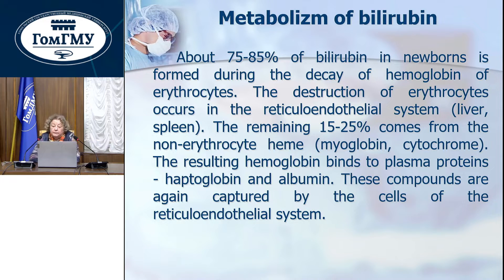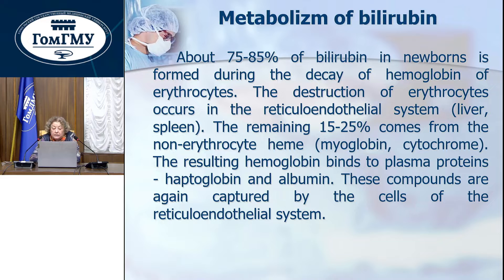Metabolism of bilirubin: About 75–85% of bilirubin in newborns is formed during the destruction of hemoglobin of erythrocytes. The destruction of erythrocytes occurs in the reticuloendothelial system, in the liver and spleen. The remaining 15–25% comes from non-erythrocyte sources, such as myoglobin and cytochrome. The resulting hemoglobin binds to plasma proteins, such as haptoglobin and albumin, and these compounds are again captured by the cells of the reticuloendothelial system.